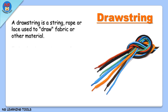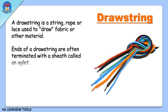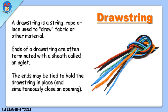Drawstring. A drawstring is a string, rope, or lace used to draw fabric or other material. The ends of a drawstring are often terminated with a sheath called an aglet. The ends may be tied to hold the drawstring in place and simultaneously close an opening.